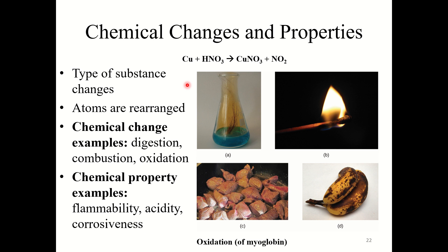A few examples of chemical changes: with a chemical change, the type of substance changes and the atoms are rearranged. Examples include digestion, combustion, and oxidation — all involve a reaction where atoms are being rearranged. For example, if you react copper with HNO3 (nitric acid), you get copper nitrate and nitrogen dioxide. This is a chemical change because the atoms are being rearranged. Chemical property examples include flammability, acidity, and corrosiveness — all depend on the chemical makeup of the matter.